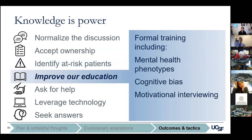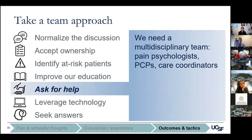We should improve our training to be better equipped to tackle these issues. We need to learn about mental health conditions just as we do about physical conditions. Similar to how we classify the degree of ACL laxity, we should consider a patient's mental health phenotype as integral to their health status. We should understand there is an evolutionary basis for these types of pain perceptions, so that we and our patients understand the entrenched nature of cognitive biases. We should incorporate formal training on tactics such as motivational interviewing to coach our patients through difficult situations.